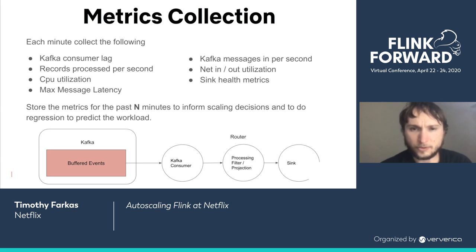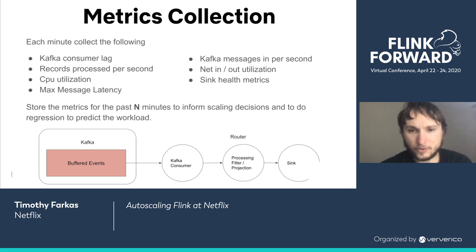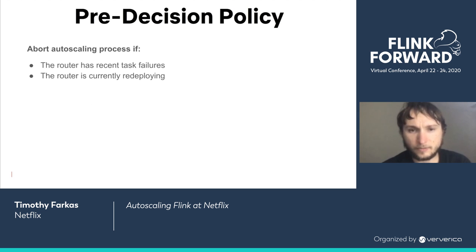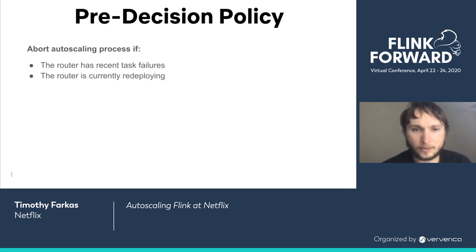In the collect step, we gather metrics each minute: Kafka messages in per second, CPU utilization, network utilization, and records processed per second. We store Kafka messages in per second to predict the workload in future steps. After collecting, we apply pre-decision policies. The first detects if there are recent task failures, and the second detects if the cluster is currently being redeployed. In both cases we abort autoscaling because the cluster is not in a state where we can make a decision.